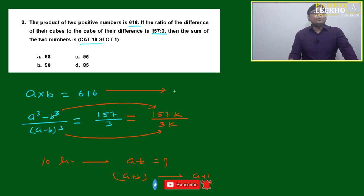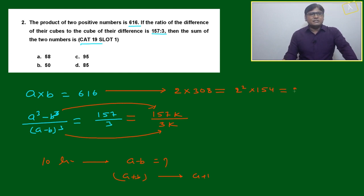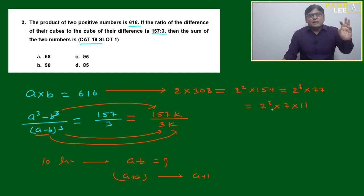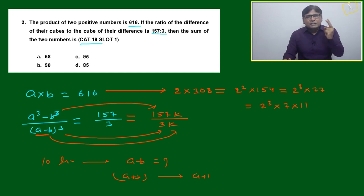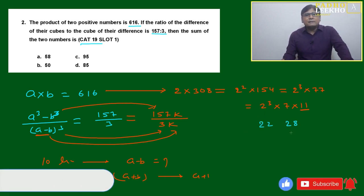Since we know 616, we can write it as a product of factors. Let's factorize: 616 equals 2 squared times 154, and further broken down — three 2s, one 7, and one 11. Now, the difference of the two numbers must be a multiple of 3 (3k format). Selecting numbers from these factors: if we take 11 times 2 equals 22, and 4 times 7 equals 28, the difference is 6, which is indeed a multiple of 3.